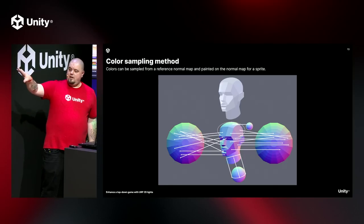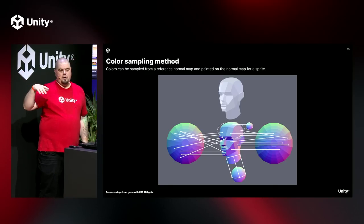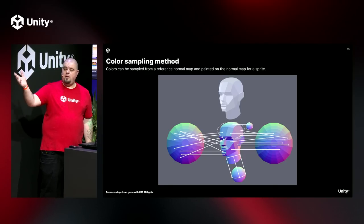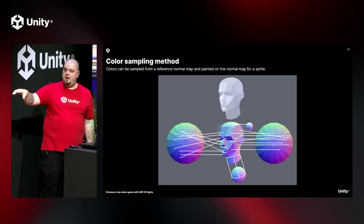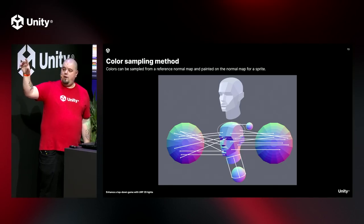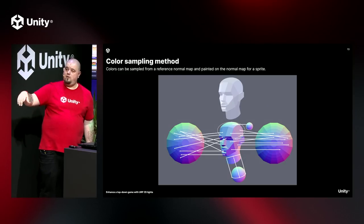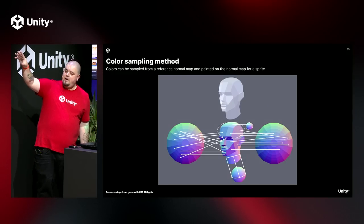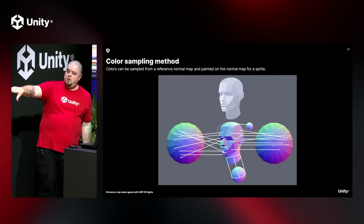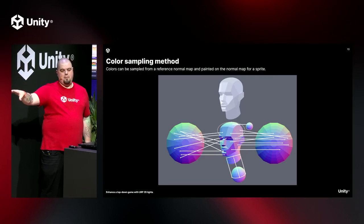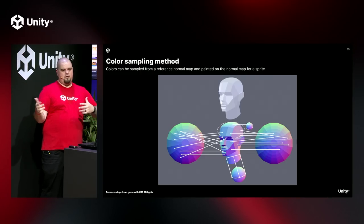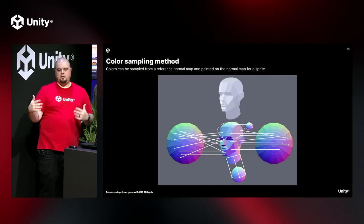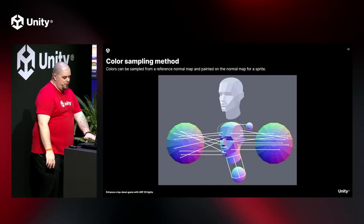Here's an example of the color sampling method. This is basically going in to create your color map by sampling from different sections of the image — getting the head on the top and applying the normal map on the bottom. The team is showing different ways that you can generate your normal map.